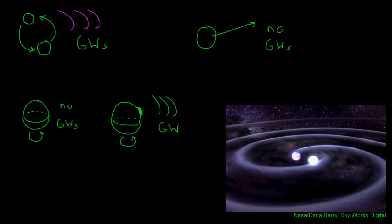It turns out that spinning neutron stars — the cores of dead stars that have collapsed down — might have some of these bumps, or so-called mountains in them. We call them mountains even though they might be a meter high. But these bumpy neutron stars, as they spin, might produce high-frequency gravitational waves. So this is another example of a system that will produce gravitational waves.